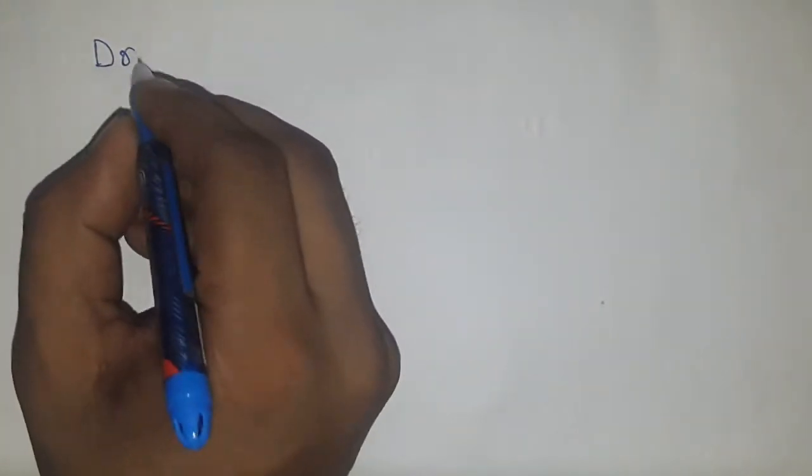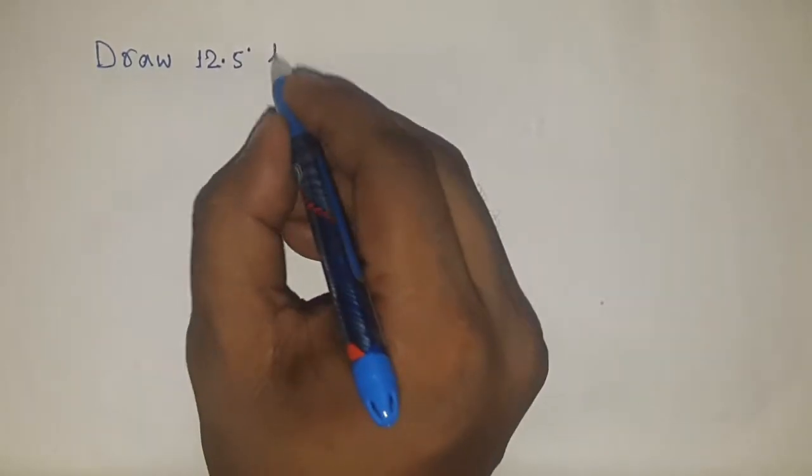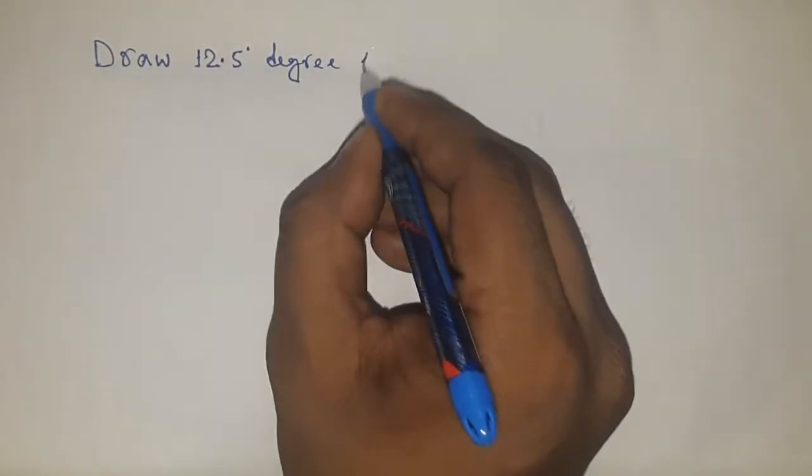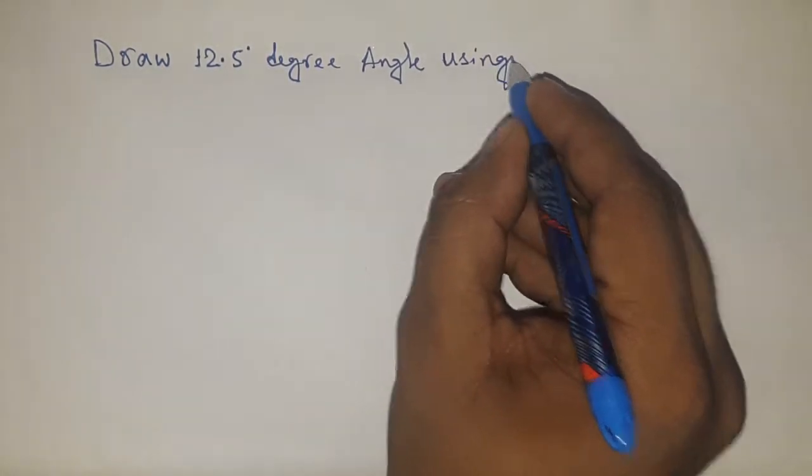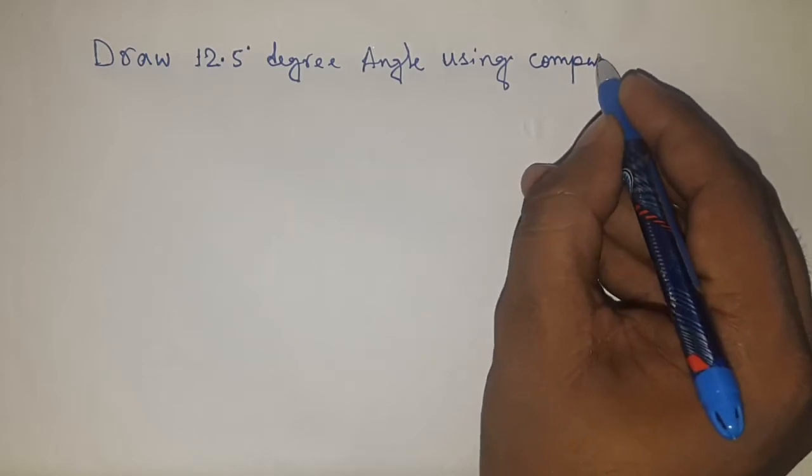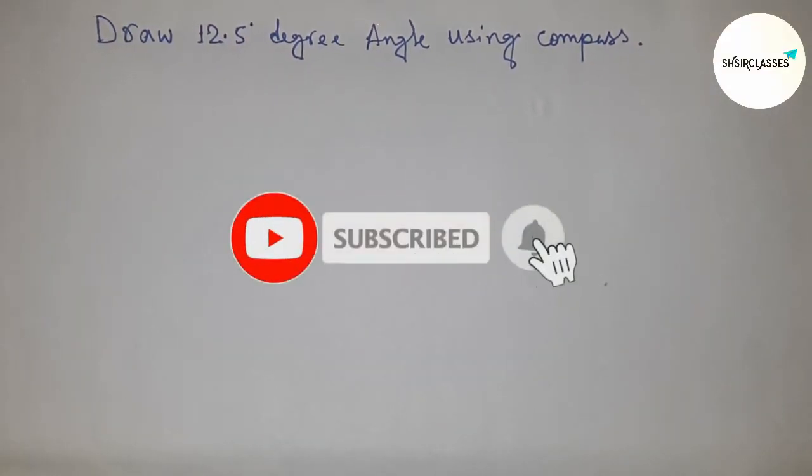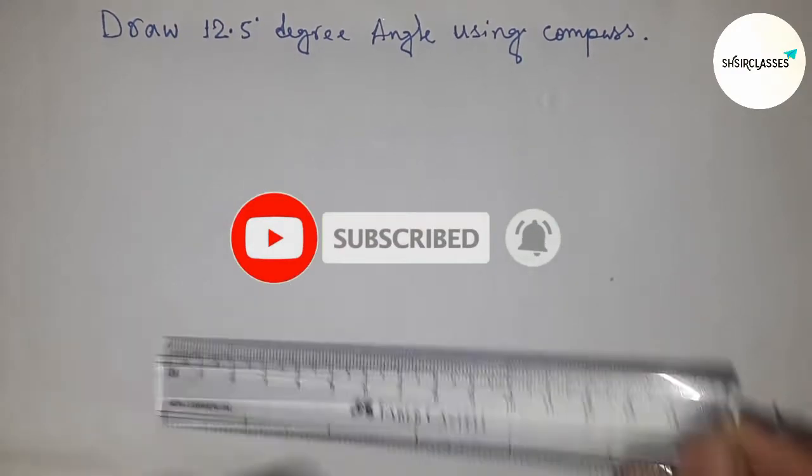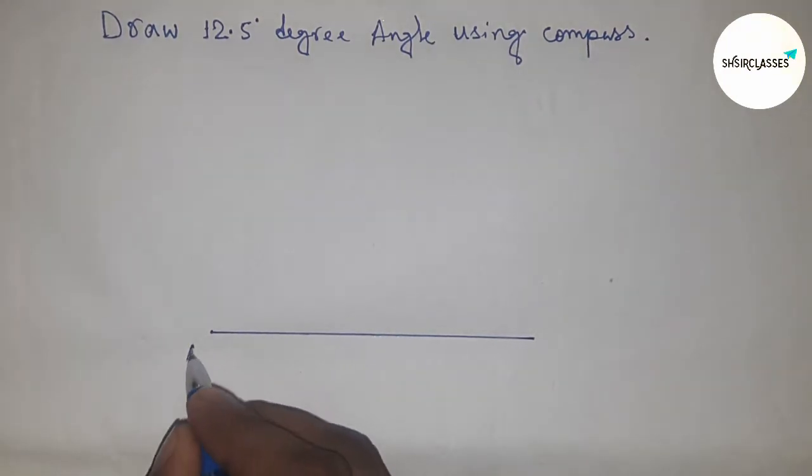Hello students, welcome to SSR Classes. Today we're talking about the construction of a 12.5 degree angle using a compass. Before starting, please subscribe to the channel and press the bell icon for future video notifications. First of all, draw a line of any length. This is line AB.